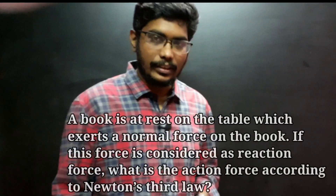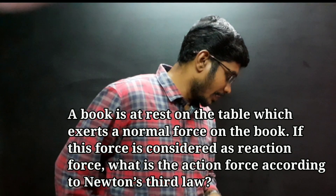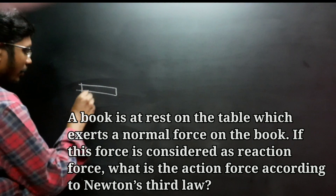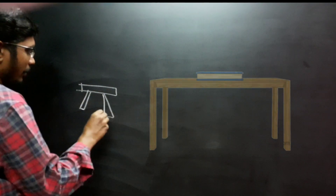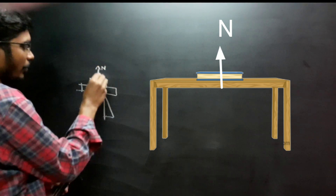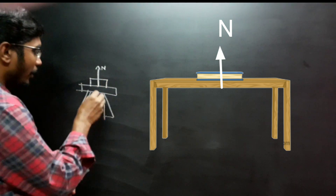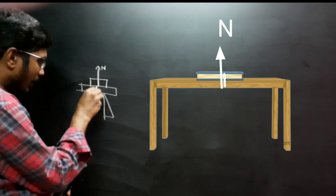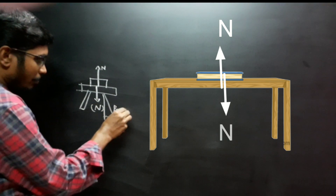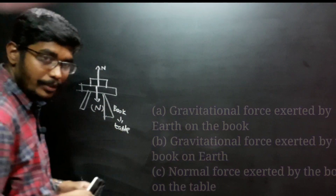The third question on screen: a book remains on a table. It exerts a normal force. The table exerts a normal force on the book. This is the action-reaction pair. Book exerts force on table — that is action; table exerts normal force on book — that is reaction. The right answer is option C.